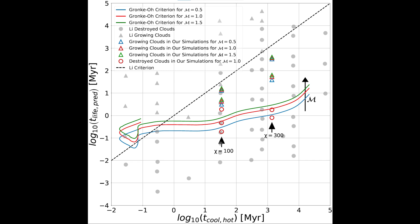The colored curves that you see here represent the Gronke Oh criterion with different Mach numbers of the background wind and the clouds above this curve show growth but not those below. The black broken line is the Lee criterion and because we find that there is cloud growth below this line, there is no agreement with the Lee criterion.